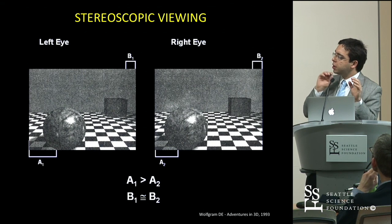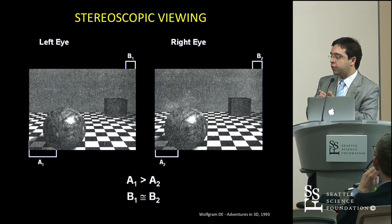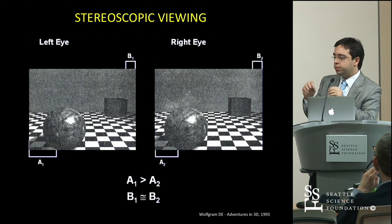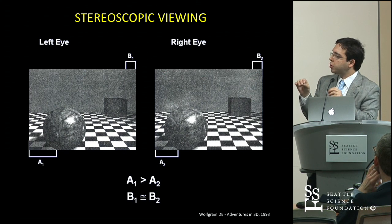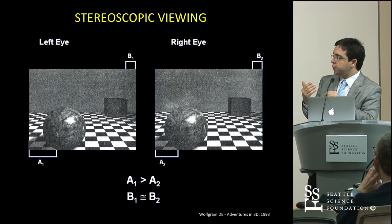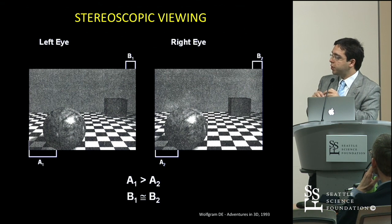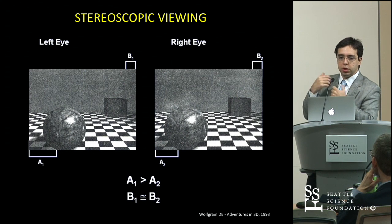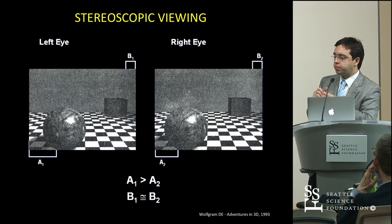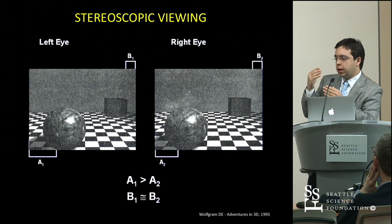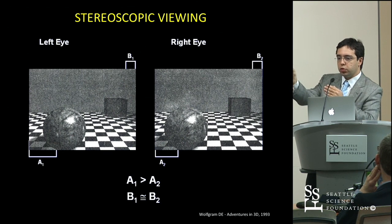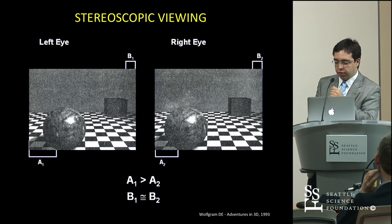These are the two images that the different eyes can get from a scene. You can see that objects from one image to the other move a little bit in position horizontally. Objects that are closer to the viewer move a little bit more than objects that are farther away. This difference in position is what tells the brain how close the object is to the viewer — what is moving more would be closer, and what is moving less would be flat or really far away.